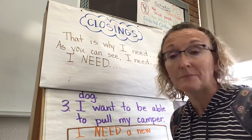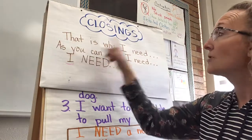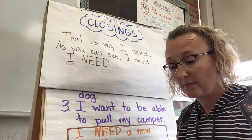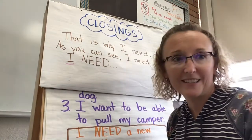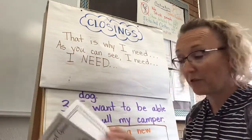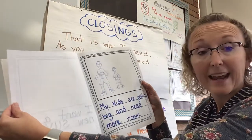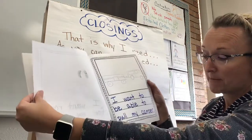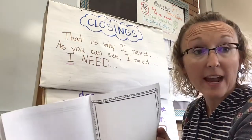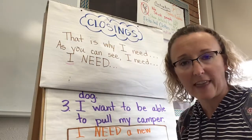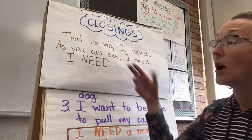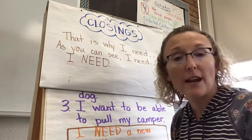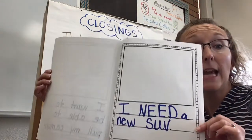I could say 'that is why I need a new SUV' and I could have written that on my last page. Listen to how that would sound: 'I want a new SUV. My kids are getting big and I need more room. I want room for my dog. I want to be able to pull my camper. That is why I need a new SUV.' Doesn't that sound nice? It kind of flows together and goes in order. Or I could end with 'as you can see, I need a new SUV,' or just 'I need a new SUV.'